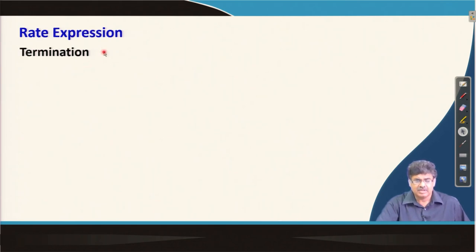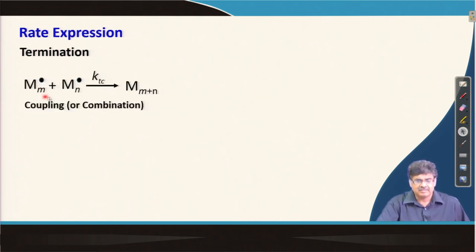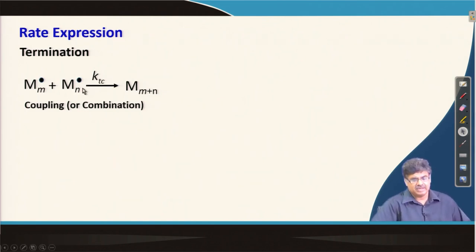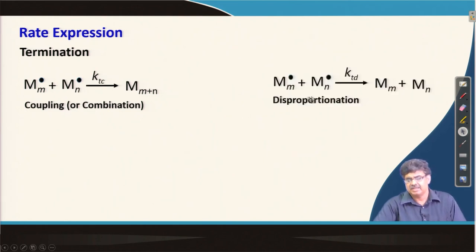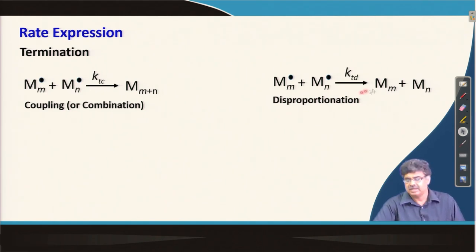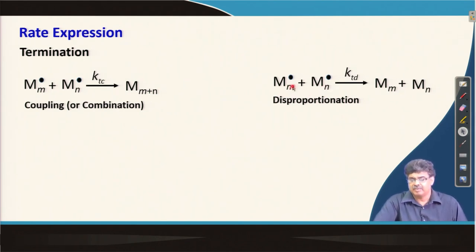We will now move to the termination step. Termination is done by bimolecular interaction between two propagating radicals, and it can generally be done in two ways: either by coupling/combination or by disproportionation. In case of coupling, we get a single polymer chain from two propagating radicals, whereas in case of disproportionation, we get two polymer chains from two propagating radicals.